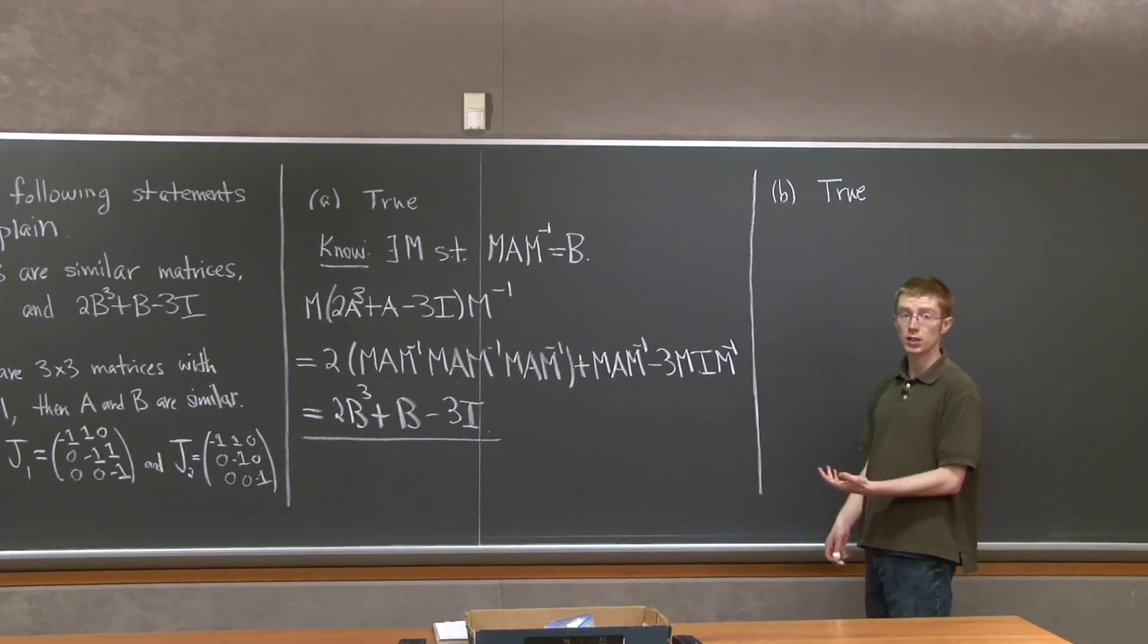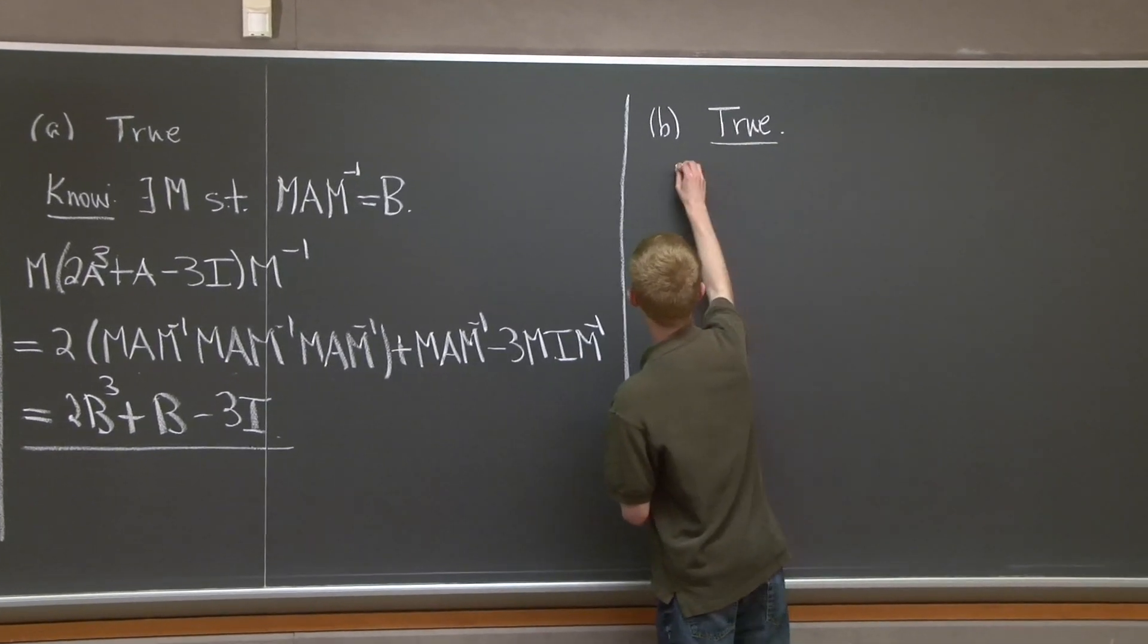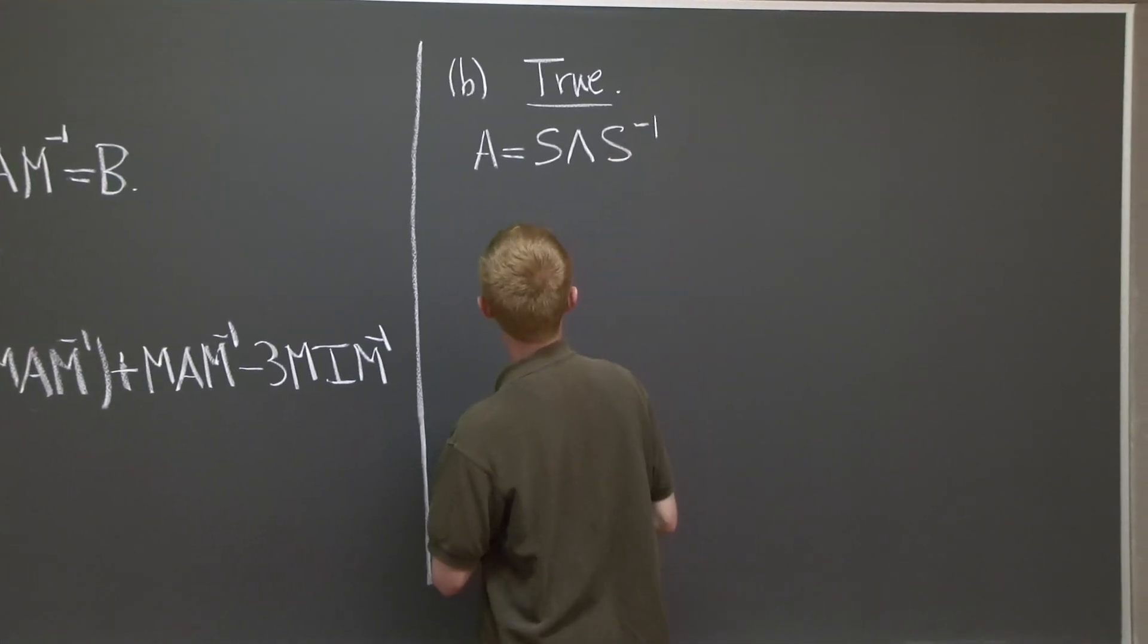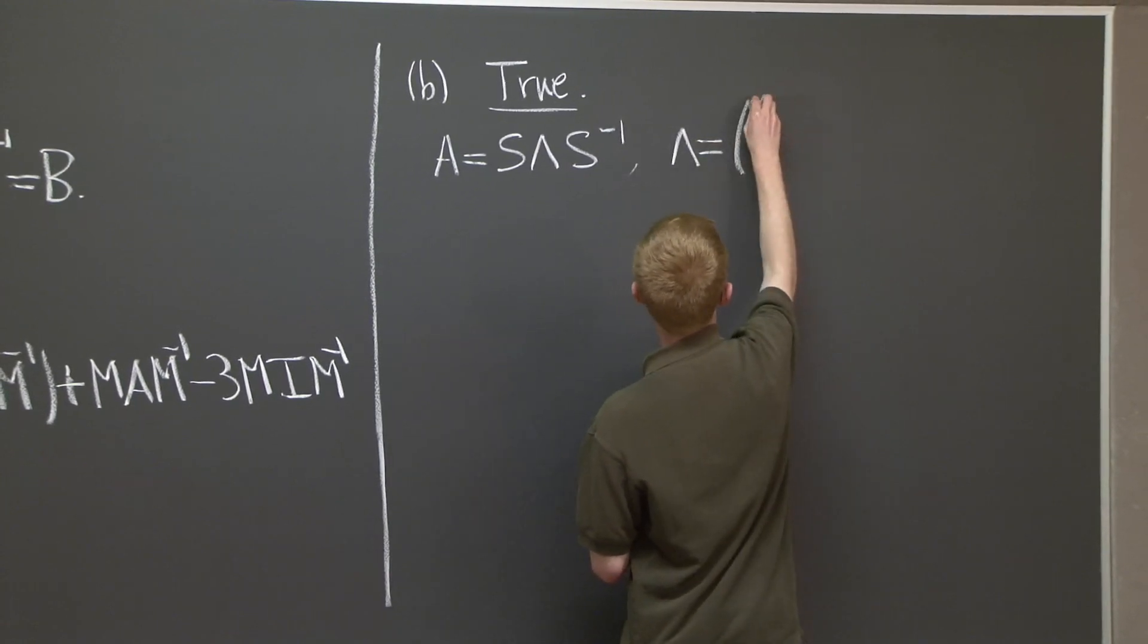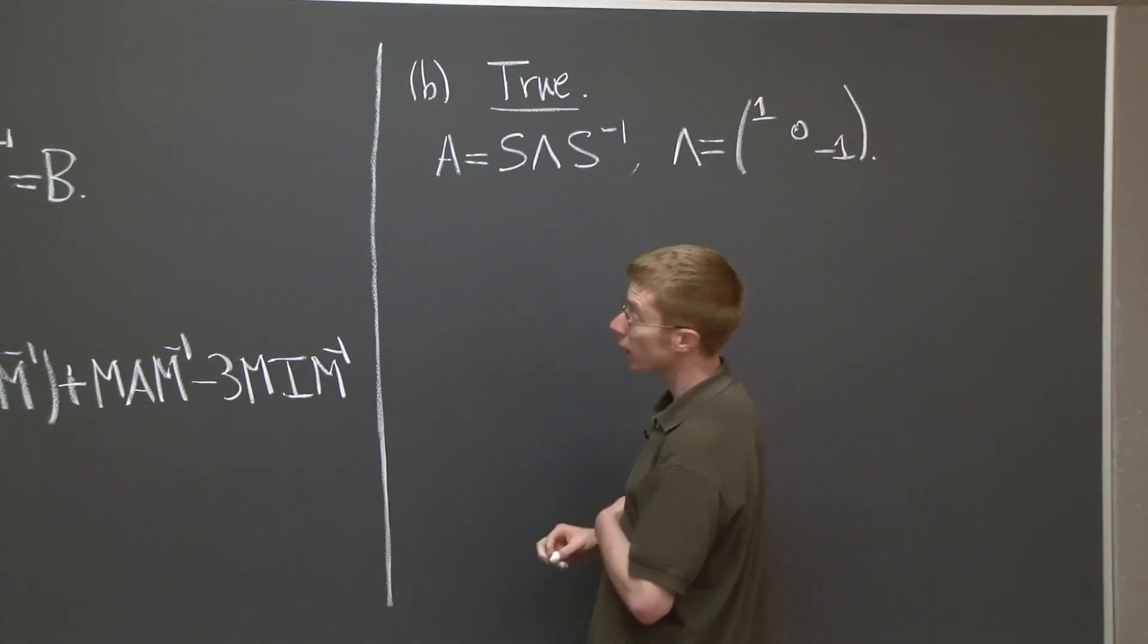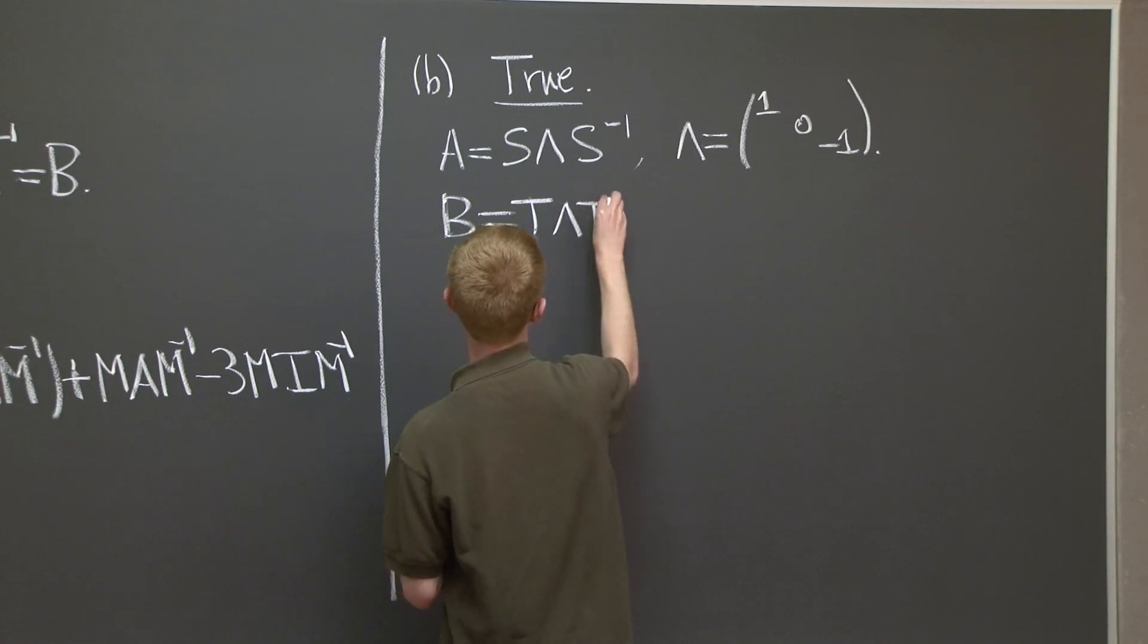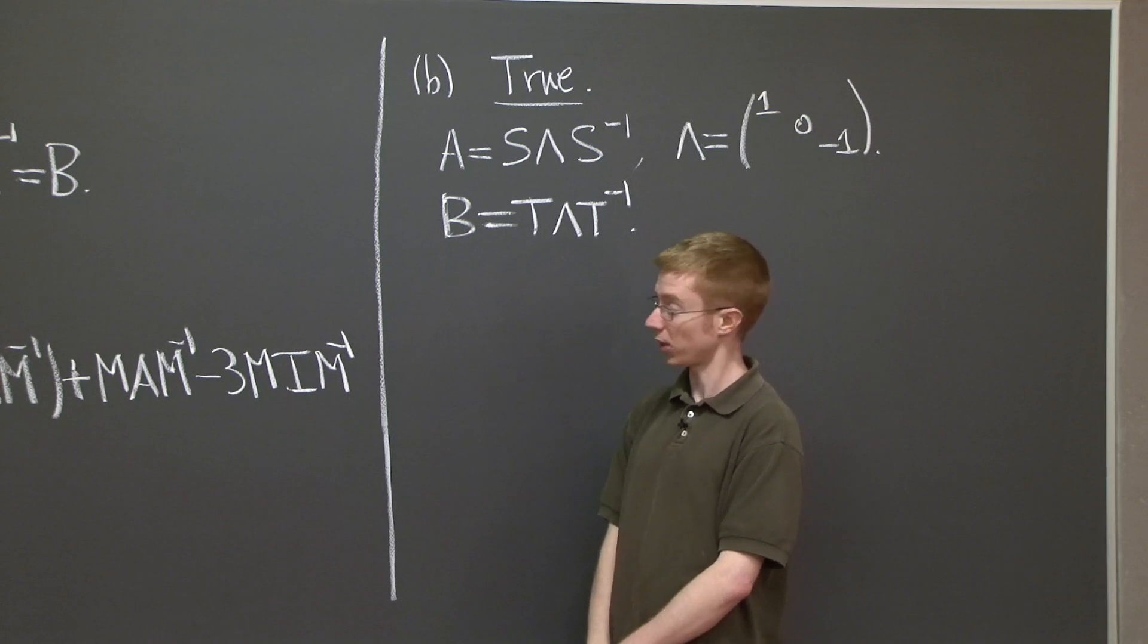A matrix with distinct eigenvalues is diagonalizable. So we can write A as SΛS⁻¹, where lambda is just this eigenvalue matrix. We can also write B as TΛT⁻¹, where lambda is the same in both cases because they have the same eigenvalues.